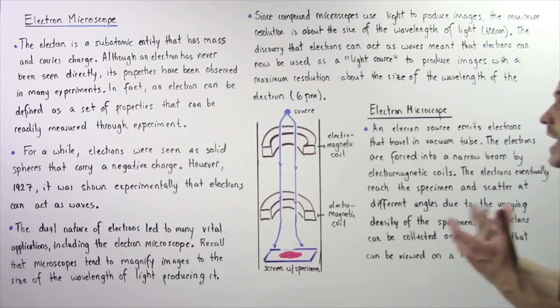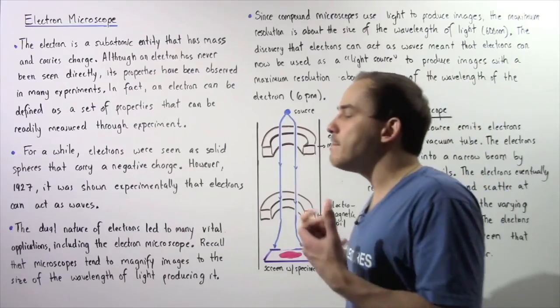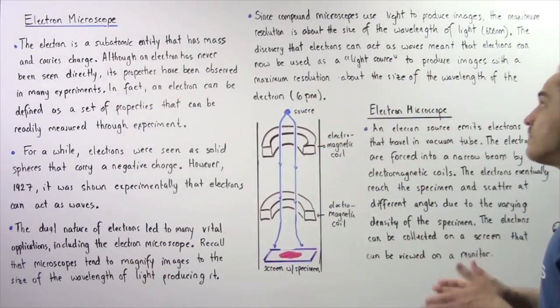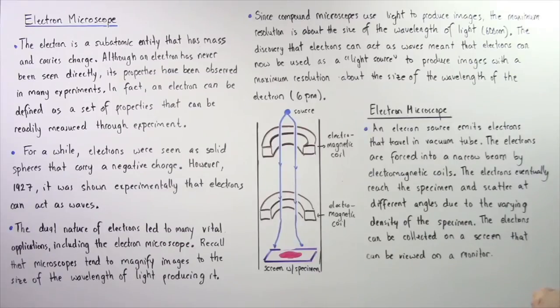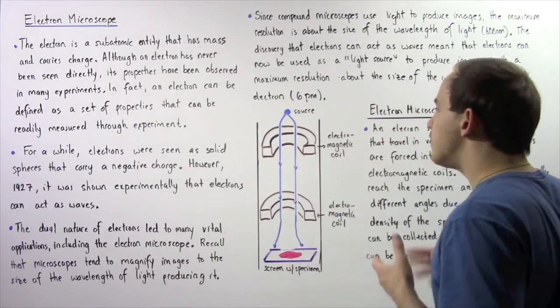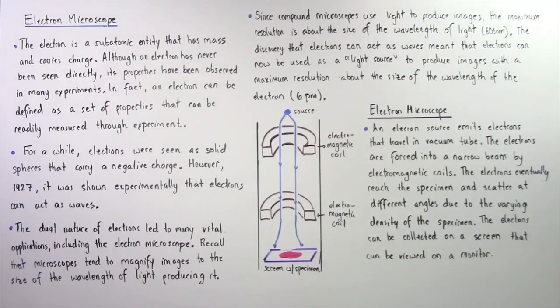And that basically means electron microscopes can magnify objects much more greatly than those compound microscopes. So now let's actually examine how an electron microscope works. This is our simplified diagram of our electron microscope.